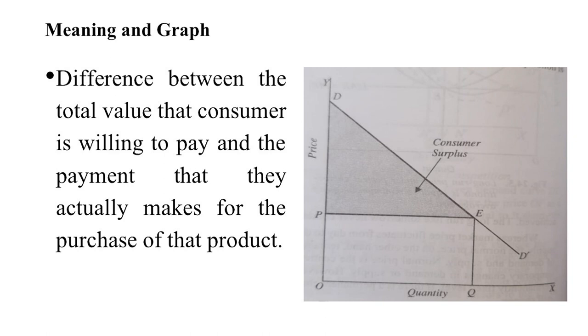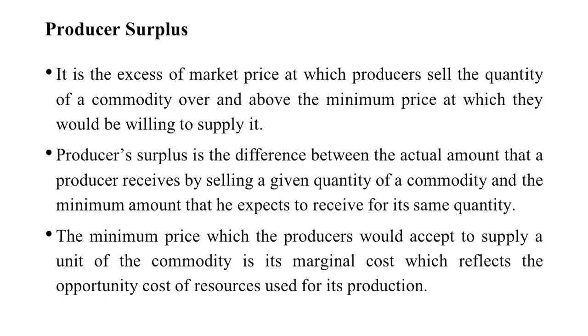So the shaded area above OP price — O-D-E — is the consumer surplus. It is the difference between what he is willing to pay and what he actually pays. This difference between the total value the consumer is willing to pay and the payment he actually makes is known as consumer surplus.